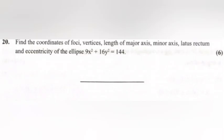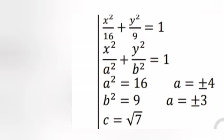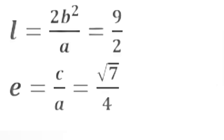Problem 20. Find the coordinates of the vertices, length of major axis, minor axis, latus rectum, and eccentricity of the ellipse 9x² plus 16y² equal 144. Answer: Dividing by 144 gives x²/16 plus y²/9 equal 1. So a² equal 16, b² equal 9; a equal 4, b equal 3; c equal root 7. Foci: F equal (plus or minus root 7, 0). Vertices: V equal (plus or minus 4, 0). Length of major axis equal 2a equal 8; minor axis equal 2b equal 6; latus rectum equal 2b²/a equal 9/2; eccentricity e equal c/a equal root 7 by 4.